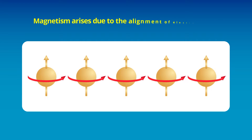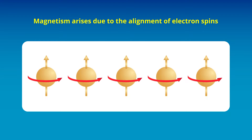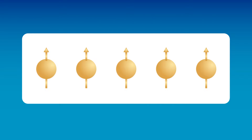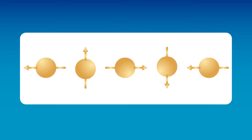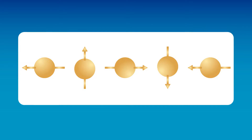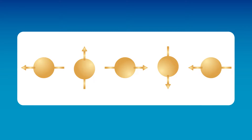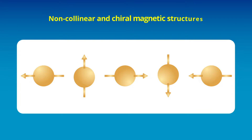Magnetism in materials arises due to the alignment of electron spins, which generates intrinsic magnetic moments. However, in certain magnetic materials with broken inversion symmetry and significant spin-orbit coupling, the electron spins tend towards aligning perpendicular to each other, resulting in non-collinear and chiral magnetic structures. This antisymmetric interaction is known as the Dzyaloshinskii-Moriya interaction, or DMI.